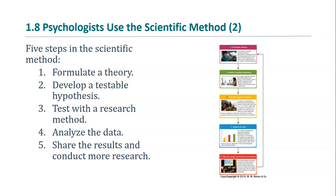The basic scientific method involves five steps. First, formulate a theory about some observable phenomenon in the natural world. Second, develop a testable hypothesis. Hypotheses are derived from the theory, and they are testable in the sense that they can be disproven. This does not mean that a hypothesis is proven — it means that we have tested it and failed to disprove it. There is always the possibility, sometimes a very small one, that the hypothesis might be disproven by future research.